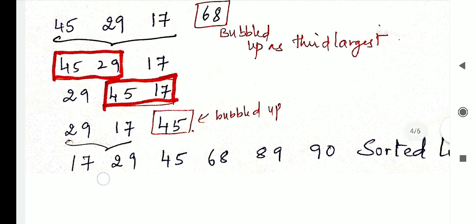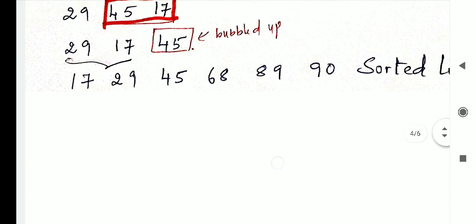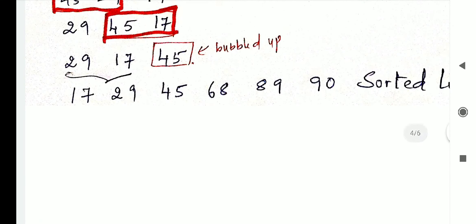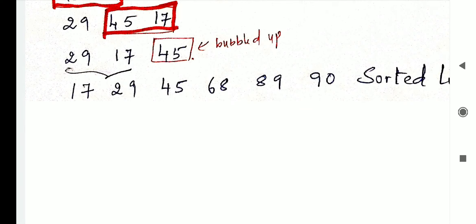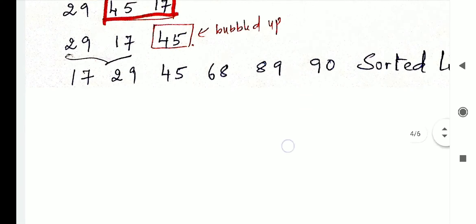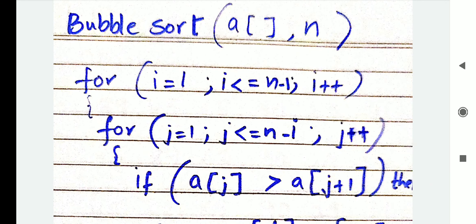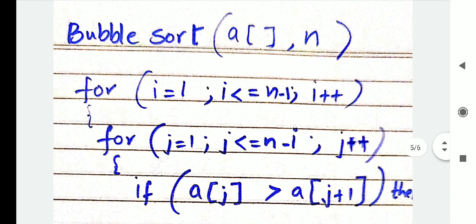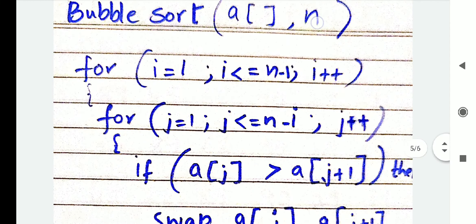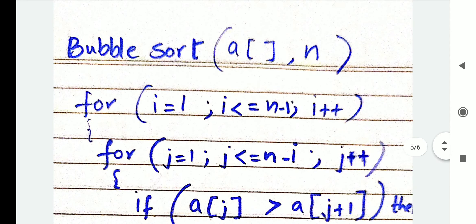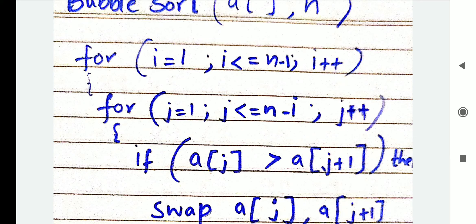So: first scan got 90 bubbled up, second scan got 89, third scan got 68, and the fourth scan got 45. The last iteration is with 17 and 29. You can see that 17 is automatically in a sorted position. So the final sorted ascending order list is: 17, 29, 45, 68, 89, and 90. I hope this is clear. Now let us see the algorithm for this. The algorithm for bubble sort uses an array with n number of elements — in our case n was 6.